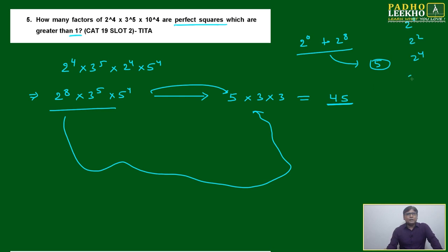2 to the power 0, 2 square, 2 to the power 4, 2 to the power 6, 2 to the power 8. These 5 options you have.